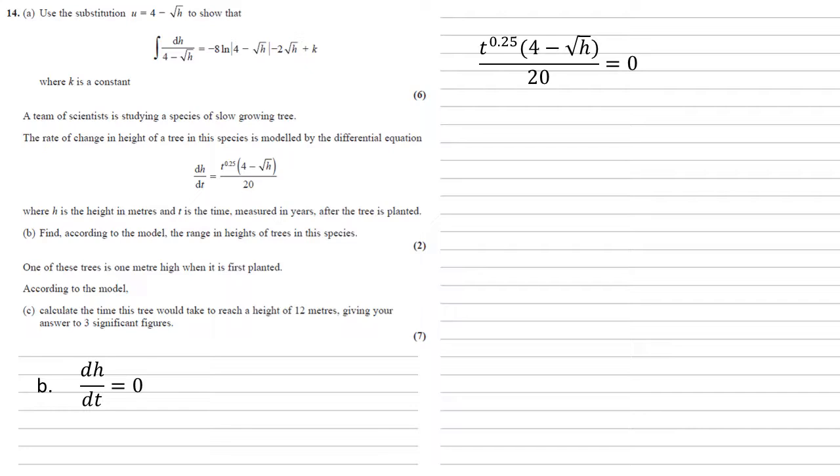We're looking for heights, so if we times by the 20 and get rid of the time by dividing by t to the 0.25, we get that the bracket of 4 minus root h must equal 0. So root h equals 4, h equals 16. This must be the maximum because we're looking at heights of trees. They're going to start from the bottom, so we're going to start from 0, so our range is 0 to 16.